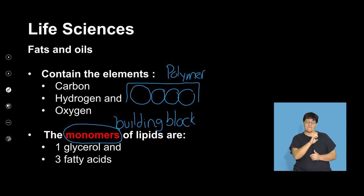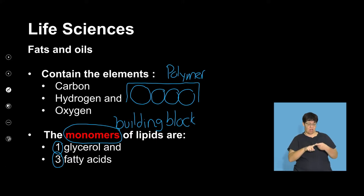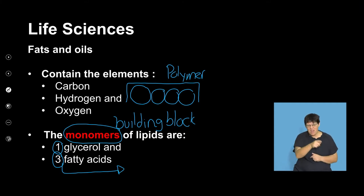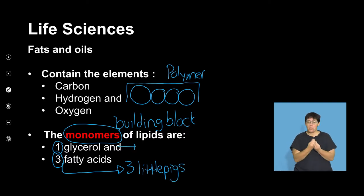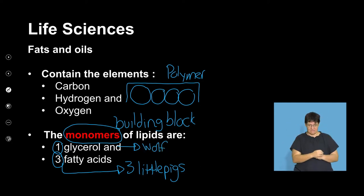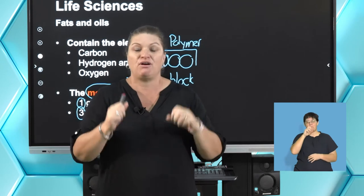When we take a fat, fats fall into their own category. They are made up of one glycerol and three fatty acids. I say to my students: three fatty acids — think of the three little pigs, who are fat and round — and who were they with? The one big bad wolf. So I always try to remember the three little pigs and the wolf. That makes up the monomer of a lipid.